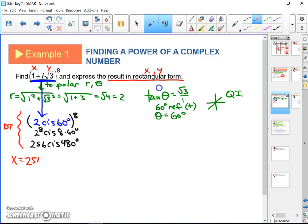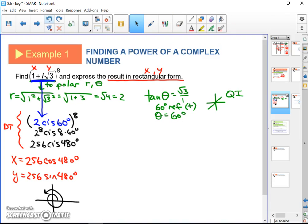So how do we get x and y? x is going to be 256 cos 480 degrees, and y is going to be 256 sin 480 degrees. Let's look at where 480 is. 480 goes all the way around past 360 and then 120 more. So basically, it's like 120. It's putting us in the second quadrant with a 60 degree reference angle.